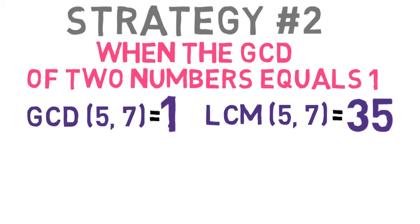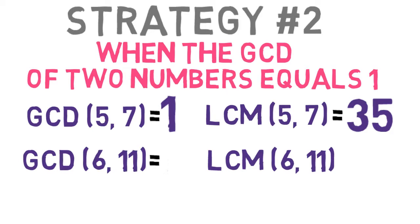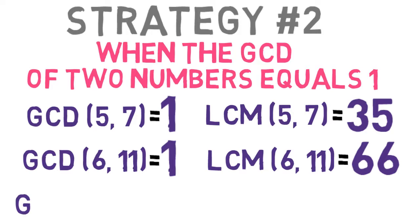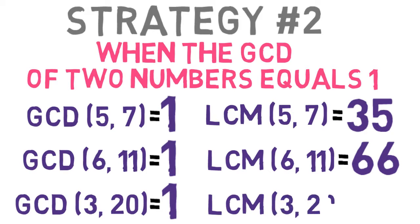As another example, consider the numbers 6 and 11. Again, the GCD of these two numbers is 1, so the LCM is 66, which is 6 times 11. And the GCD of 3 and 20 is also 1, so the LCM of these two numbers is 3 times 20, which equals 60.